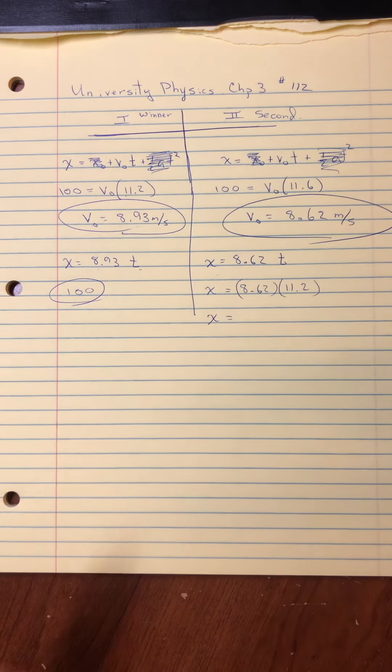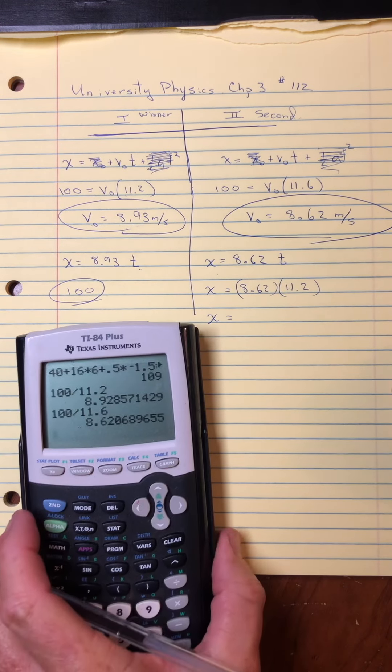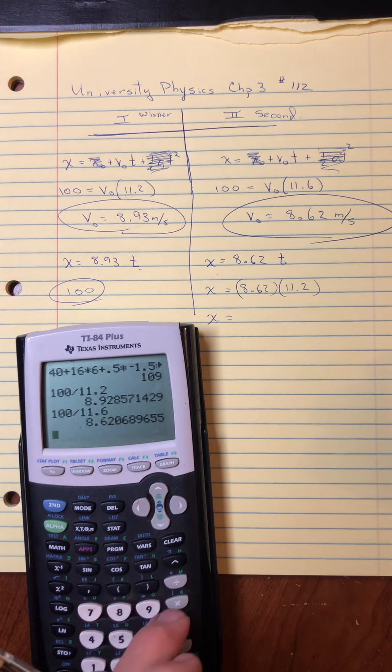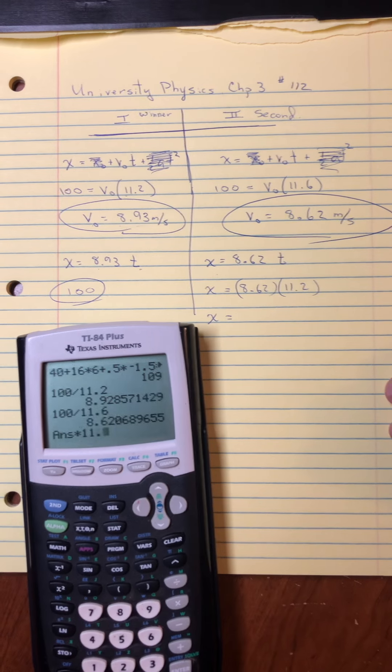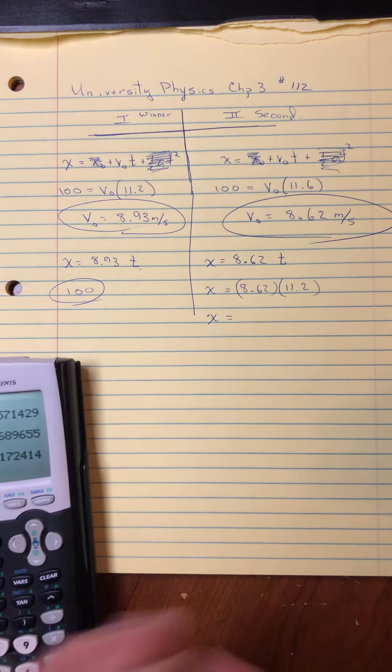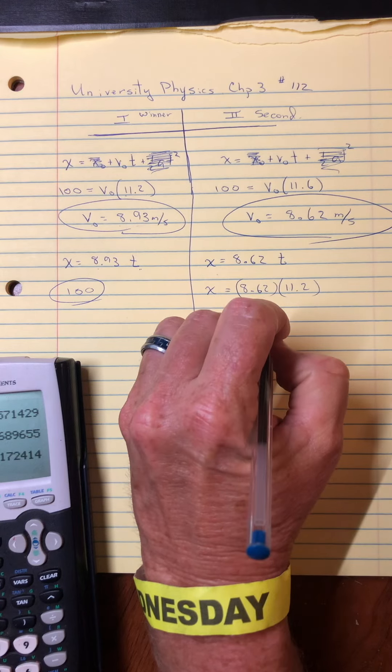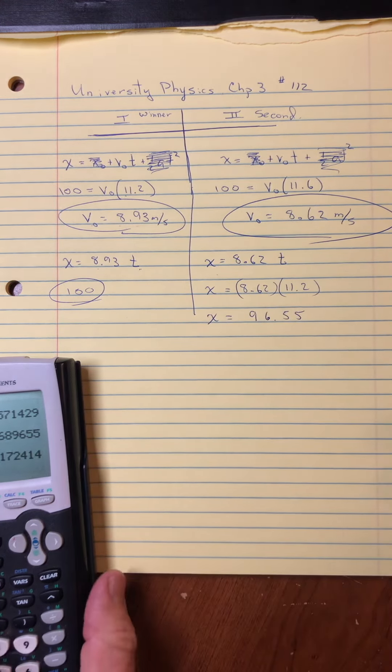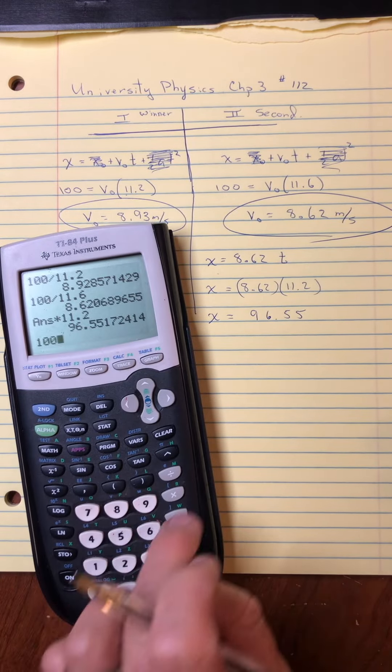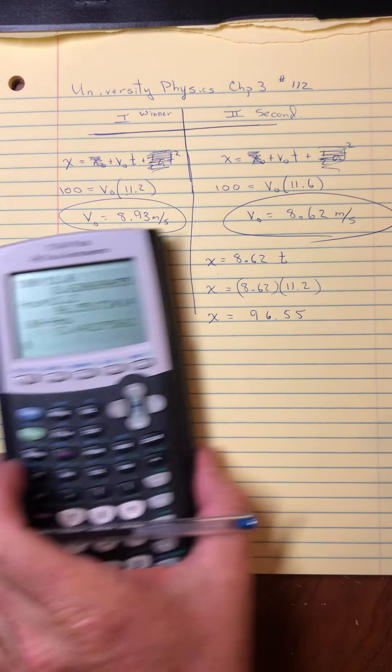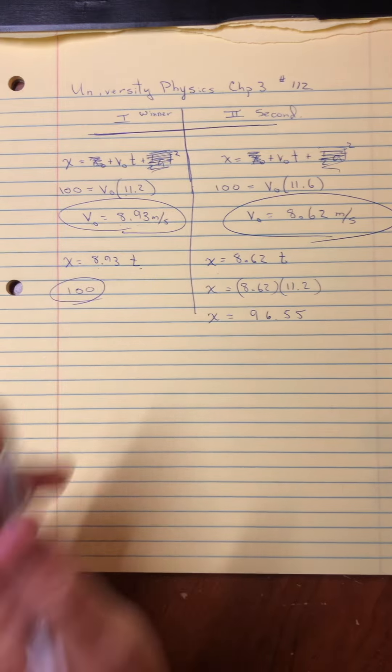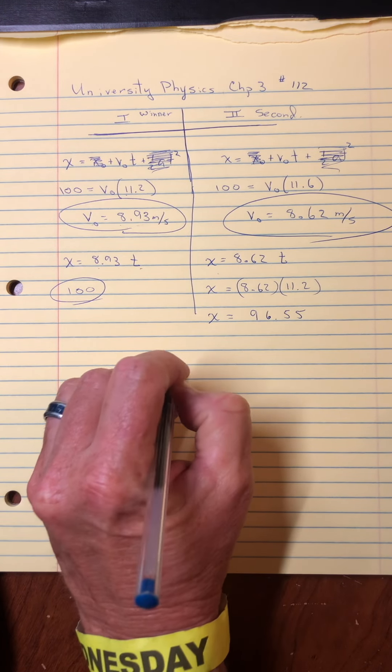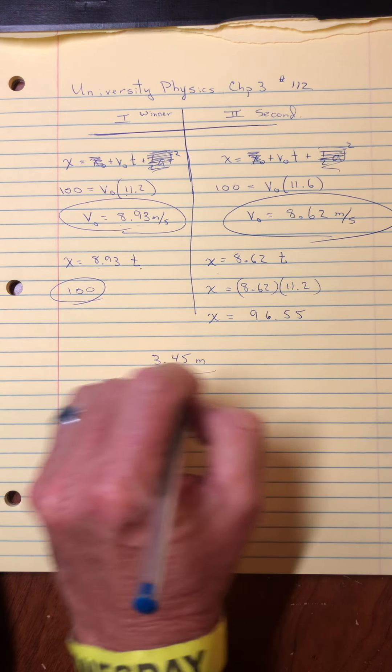And clearly, they would have to be under 100 here. So I'm going to take that speed and multiply it by 11.2 and get 96.55. And so if I go 100 minus that last answer being a difference of about 3.45 meters.